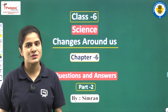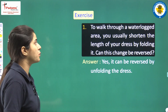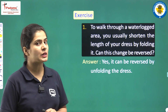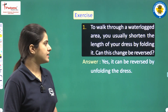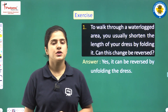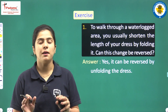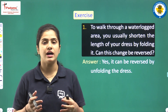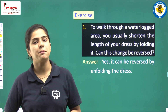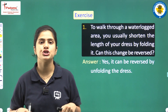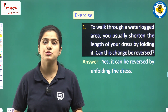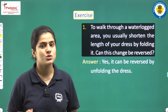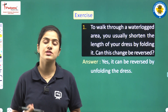What is the first question of this chapter? Question number 1: To walk through a water-logged area, you usually shorten the length of your dress by folding it. Can this change be reversed? If you have an area where there is waterlogging and you have shortened your skirt length by folding it up, can you reverse that change? The answer is yes, because this change is reversible.